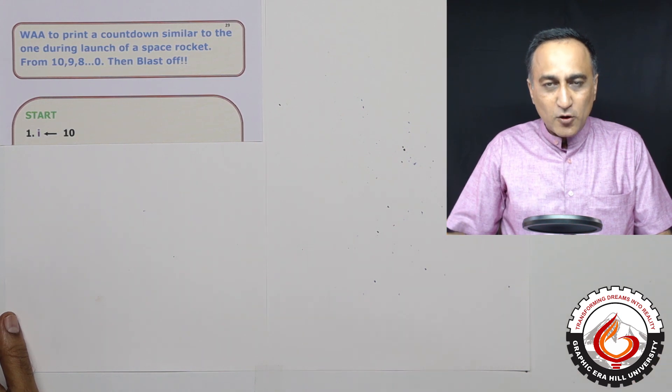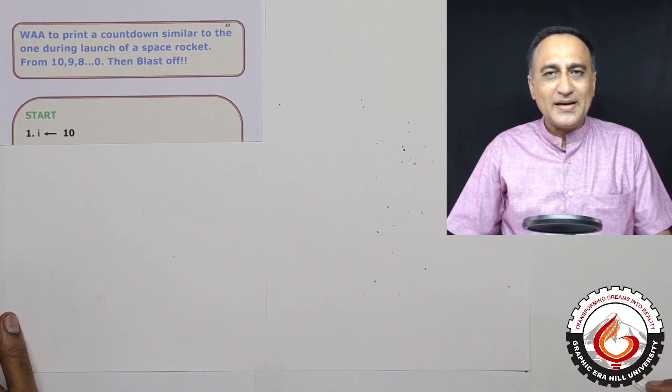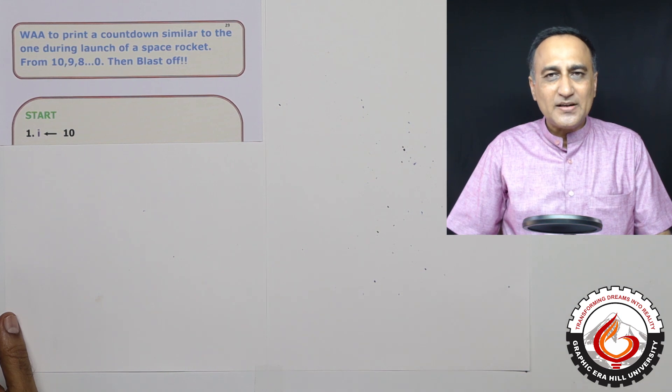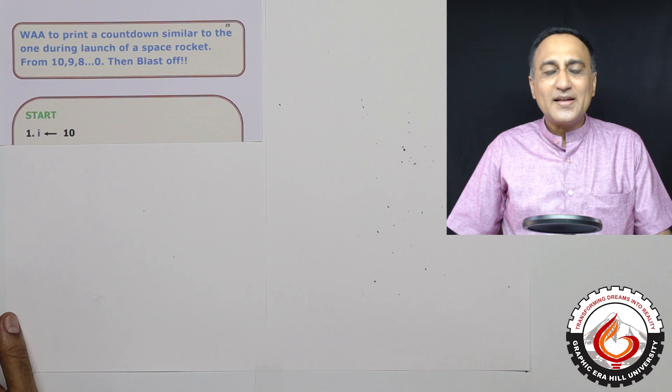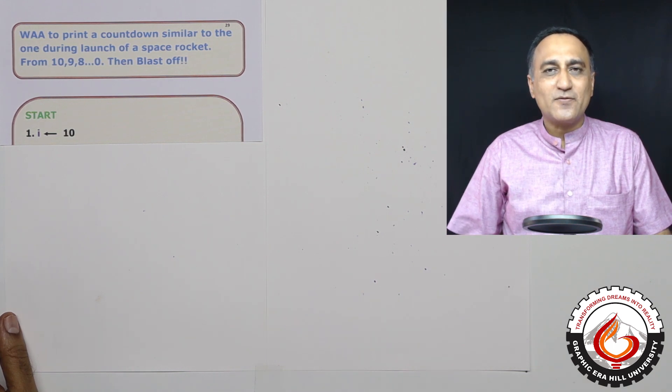So we are going to write an algorithm to do something similar to that in the sense we are going to start counting from 10 all the way till zero. And then when zero is printed, we want the message blast off to be printed.